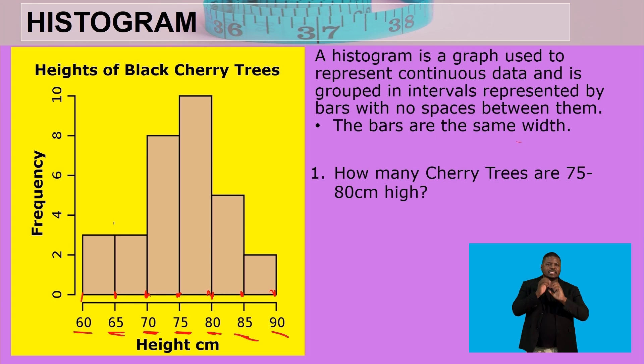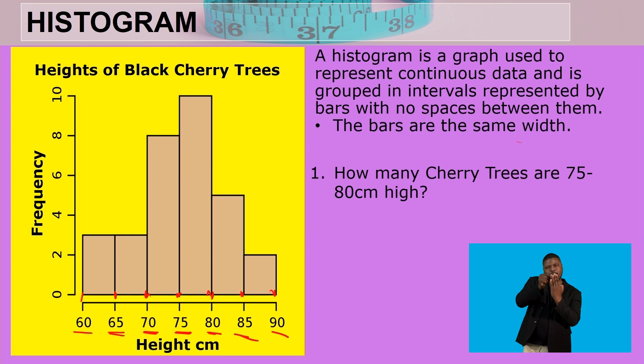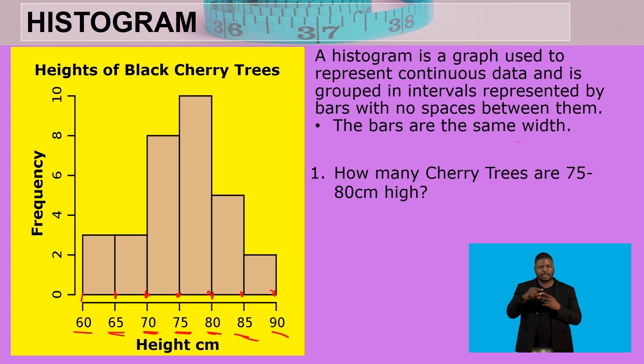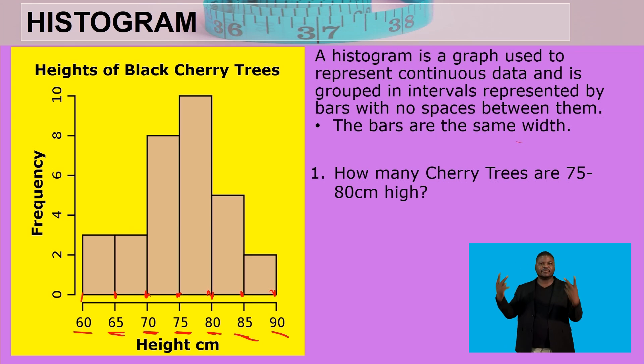There are no spaces in between the bars, so this is a histogram. The difference between a histogram and a bar graph is that a bar graph will have spaces in between to show it represents discrete data, while a histogram has no spaces in between to show it represents continuous data.